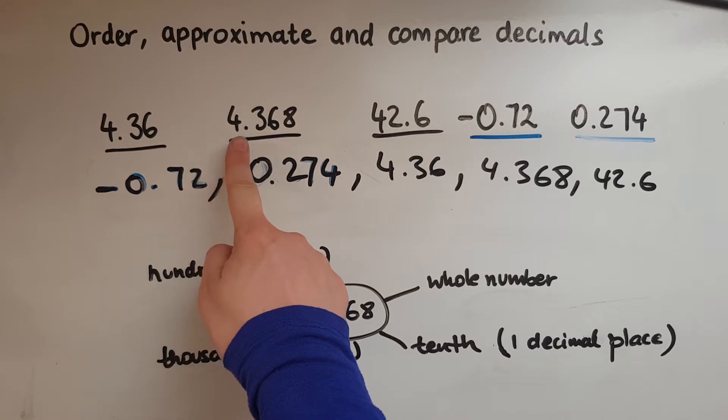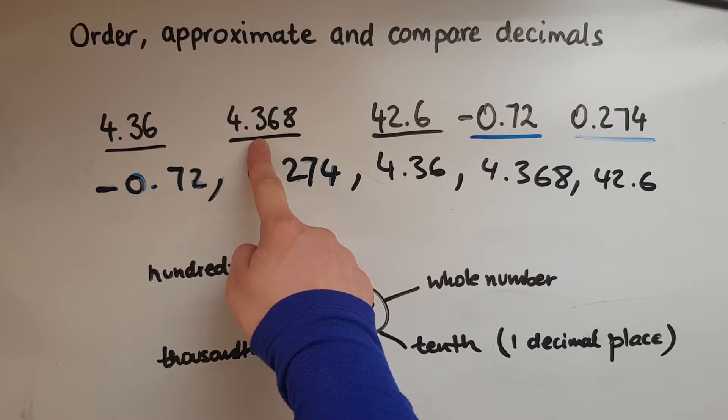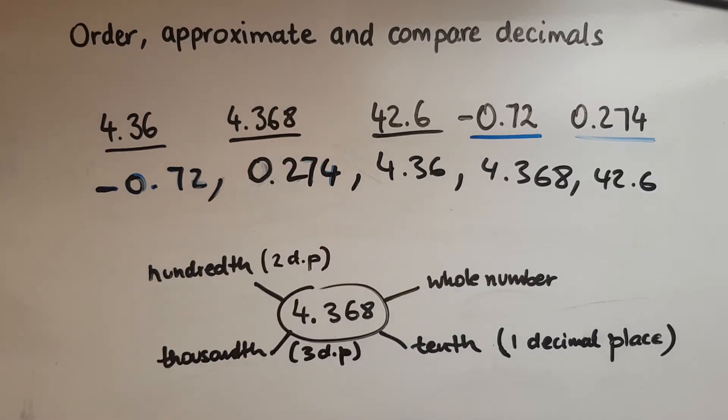So the next digit after the decimal has a bigger value than the one on the right of it. So these start to decrease in value. So we look at the whole number first, and then the first digit after the decimal point, and then the second digit, and then third digit, and so on.